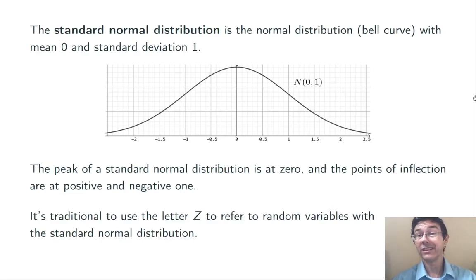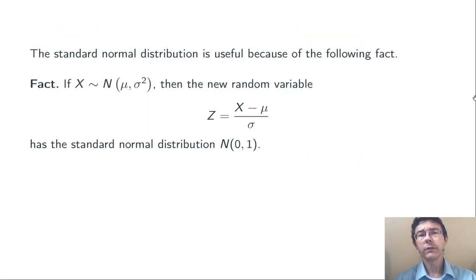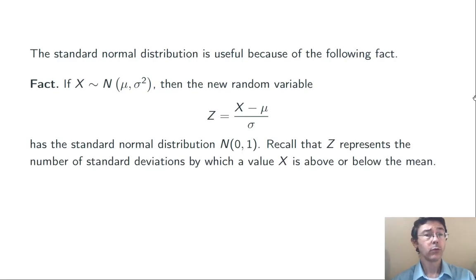It's traditional to use the letter z to refer to random variables that have a standard normal distribution. The standard normal distribution is useful because of this fact: if you have any random variable with a normal distribution, say with mean μ and standard deviation σ, then the new random variable z = (x - μ)/σ is going to have the standard normal distribution, with mean 0 and standard deviation 1. So we can transform any normal distribution into the standard normal.